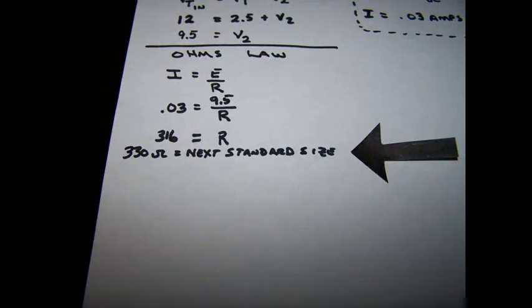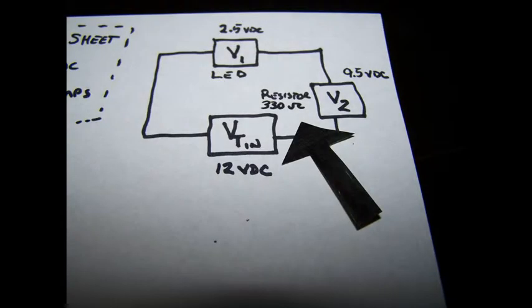When they manufacture resistors, they manufacture them in preset values. 316 ohms is not one of them. So I go to the next standard size up resistor, and in case you're wondering, I went up instead of down, because if I go up, I'll get less current flow. If I go down, I'll get more current flow. So I'd rather have a dimmer light than one that's blown out. Less current flow is better. Let's plug our new piece of information into our schematic.